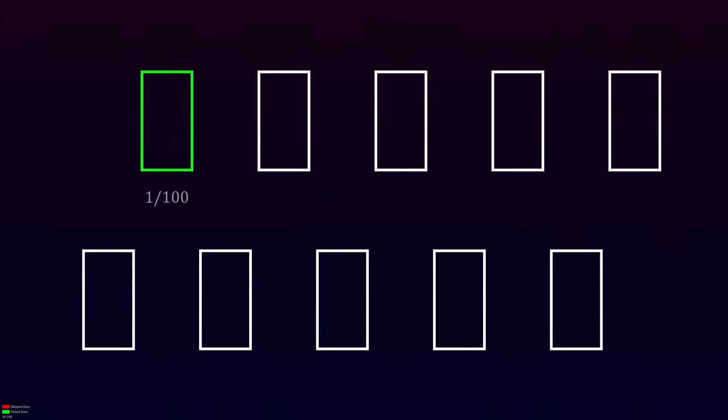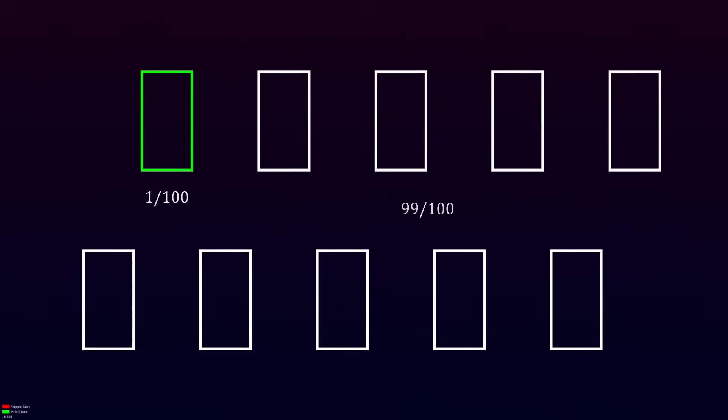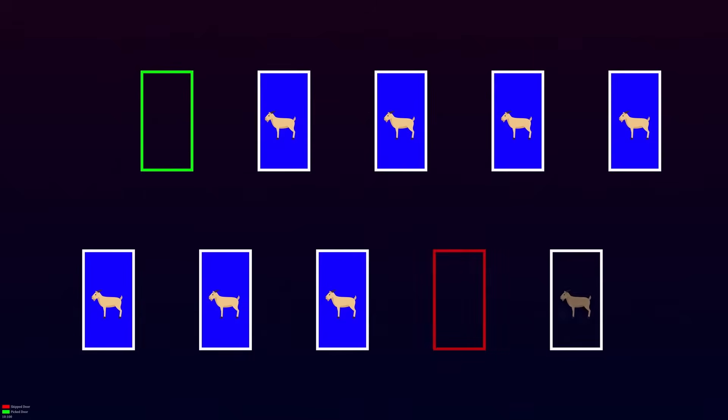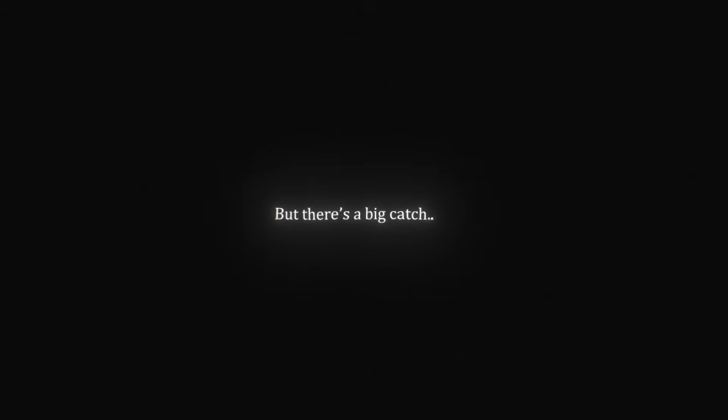At this point, most people lean towards switching. Leaving one specific door out of the 99 he opens seems deliberate, and intuitively, it feels like door 29 must be the better choice. And they'd be right. Switching is the better move, because the odds of winning shift dramatically in your favor. When you picked door 1, there was only a 1 in 100 chance that you chose the car, and a 99 out of 100 chance that the car was behind one of the other doors. Monty's actions don't change those initial odds, they just redistribute the 99 out of 100 probability. By the time Monty reveals goats behind all but one of those doors, all of that probability condenses onto door 29. Switching gives you a 99% chance of winning the car.